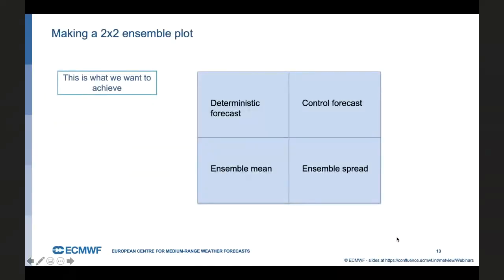So now we will create a nice classic ensemble plot. A two by two plot with this content. We want to have four maps in the plot. The top left corner has the deterministic forecast. Then the control forecast in the top right, then in the bottom row, the ensemble mean, and then finally the ensemble spread. The deterministic forecast is already created because we just simply reuse what we did in the previous exercise.